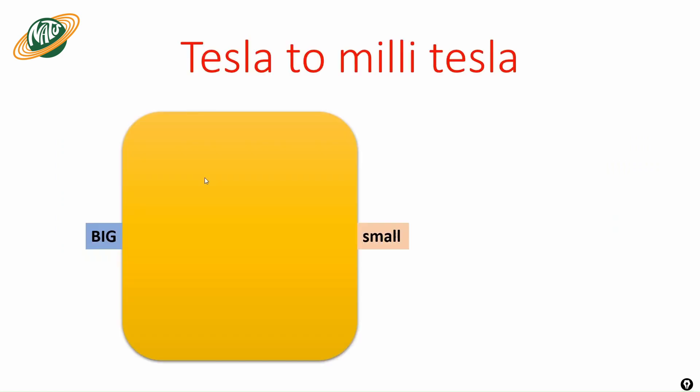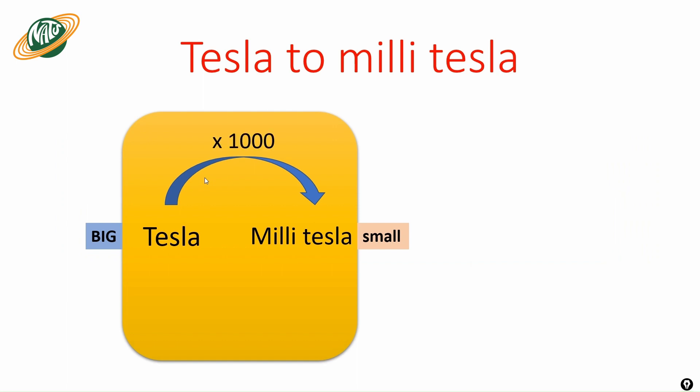I am going to take magnetic flux density. The unit to measure magnetic flux density is tesla. How do we convert tesla to millitesla, and to microtesla, and the other way around? Tesla is a bigger unit; millitesla is a smaller unit.